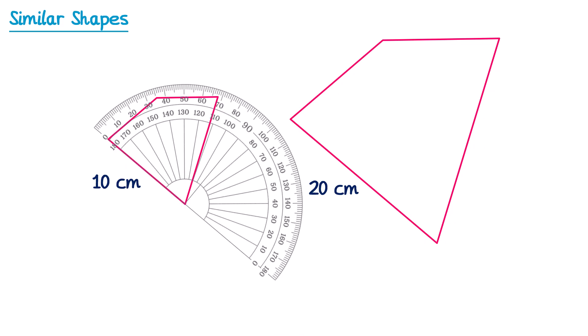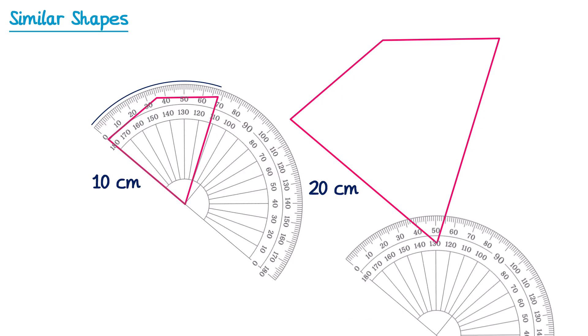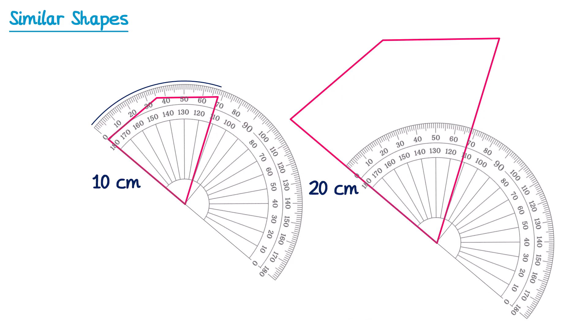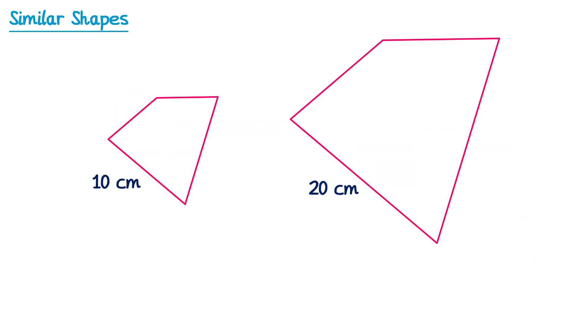Let's measure this angle here. Going around the outside scale we can see this angle is about 68 degrees. Measuring the same angle on the enlarged shape, it's also about 68 degrees. So even though we made this shape twice as big, the angle didn't change — both angles measure 68 degrees.